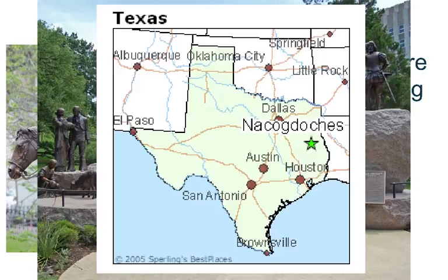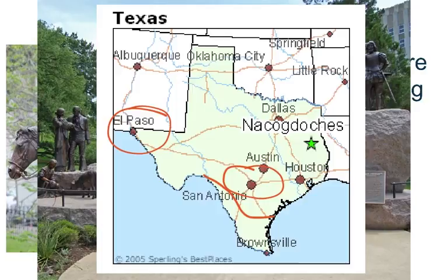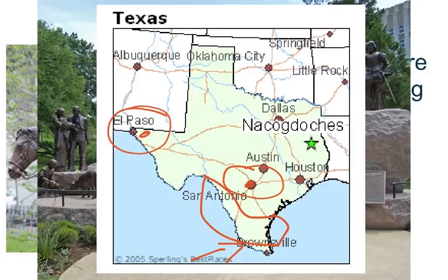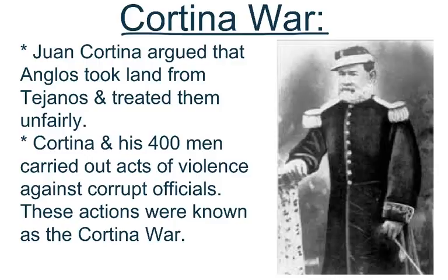Most Tejanos lived in San Antonio, the Nueces Strip, or around El Paso. On this map you can see El Paso, San Antonio, and the Nueces Strip. Not a lot has changed — many Tejanos and people with deep roots in Texas have continued to live in El Paso, San Antonio, and everything south of the Nueces River, including the Rio Grande Valley.